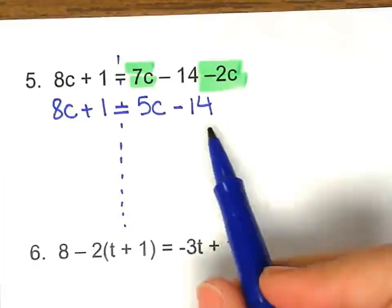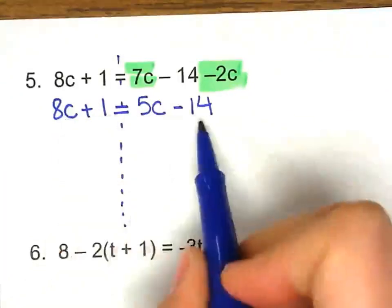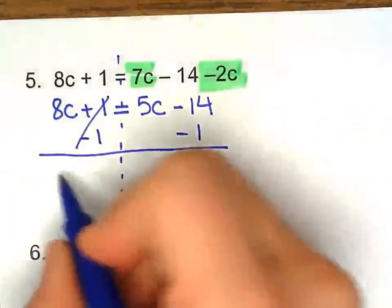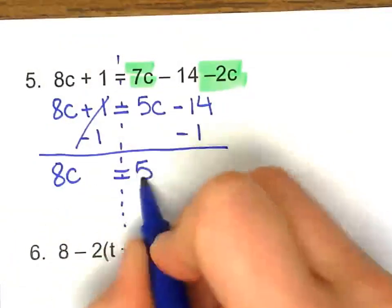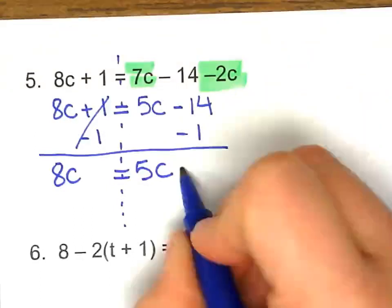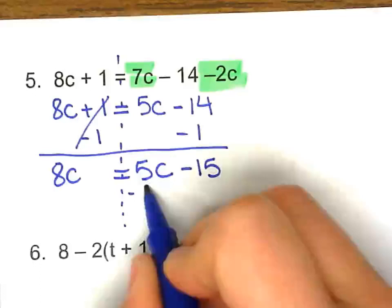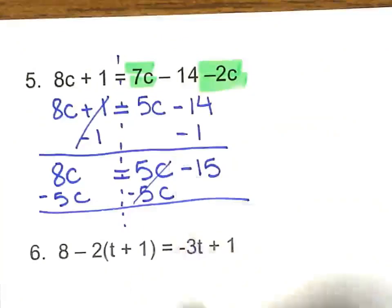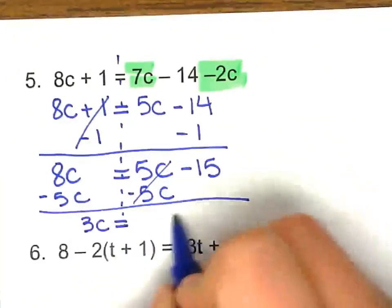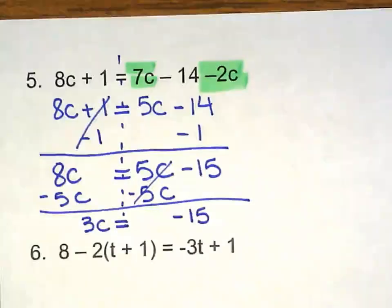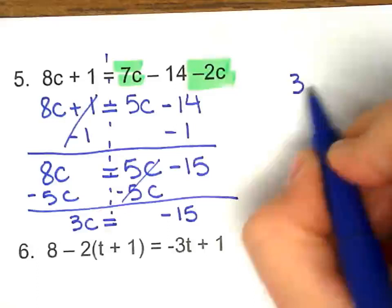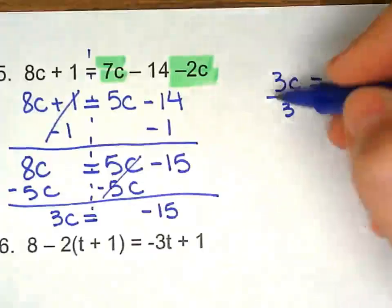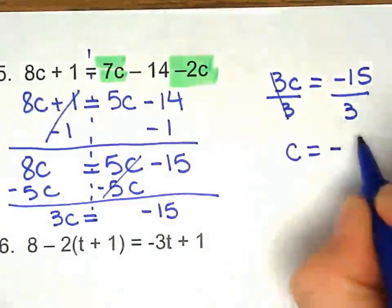Now I can start solving like I did for number 1. Variable must be on the left. Number should be on the right. Take away 1. Bring everything else down. Negative 14 minus 1. Minus 5c. Here I have 3c. Bring negative 15 down. I'm going to have to continue right here on the side. I ran out of room. So divide both sides by 3. c equals negative 5. It had one extra step compared to number 1.